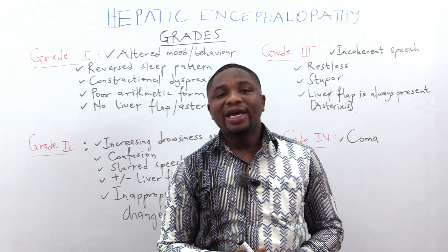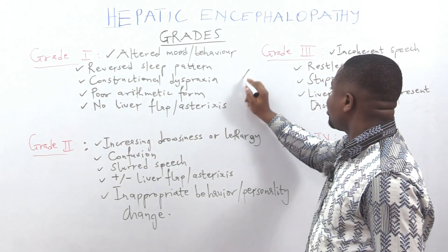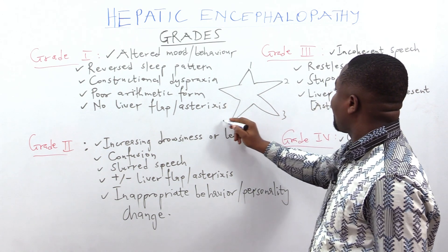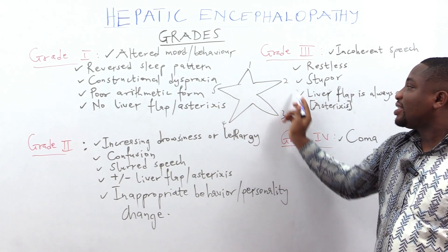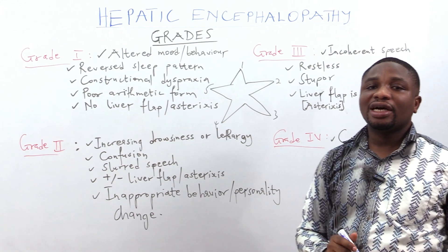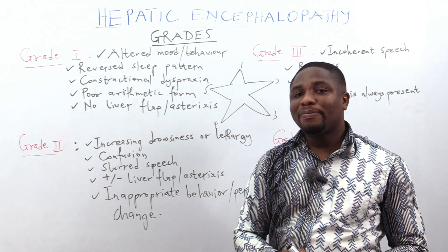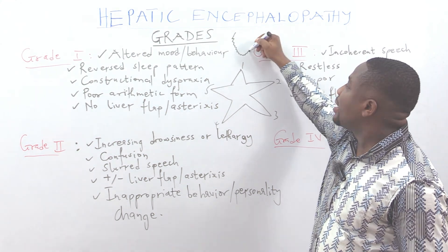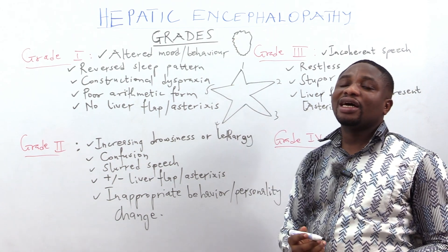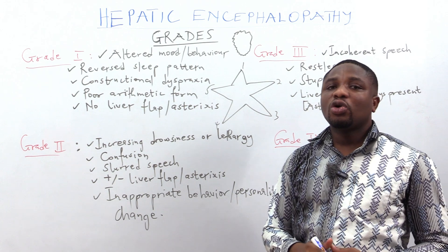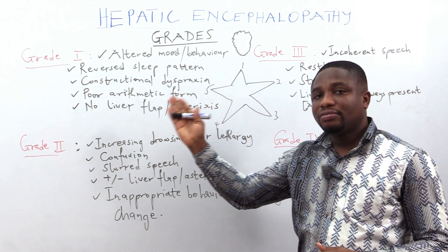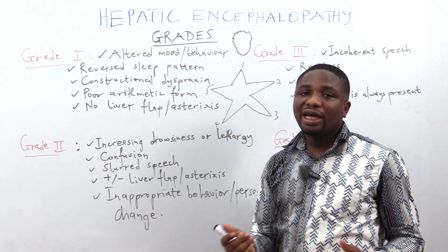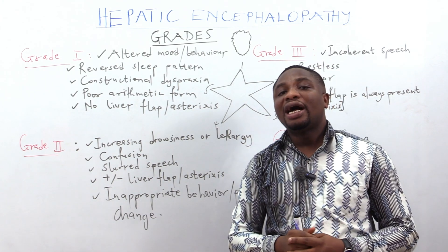Next is constructional dyspraxia, where you ask the patient to draw a five-pointed star. Inability to draw this five-pointed star is termed constructional dyspraxia. For example, a known alcoholic with hepatic encephalopathy trying to draw the five-pointed star will have difficulty — you see them drawing a distorted figure. That is termed constructional dyspraxia. Another feature of Grade 1 is poor arithmetic, where when you ask the patient to do basic arithmetic like one plus one, they are unable to give the correct answer.